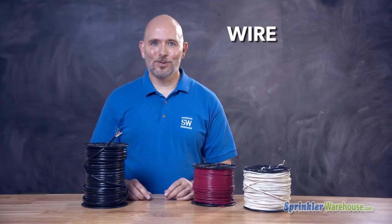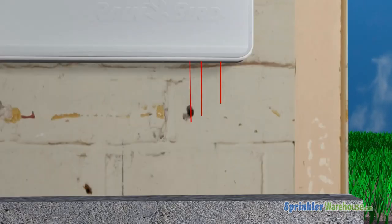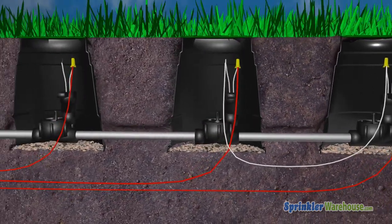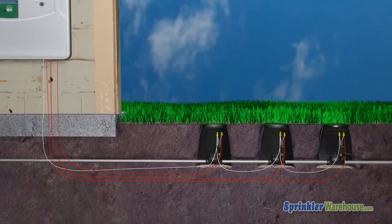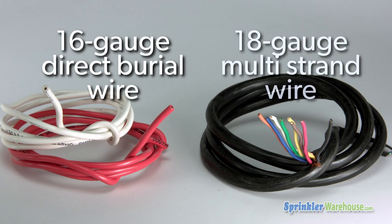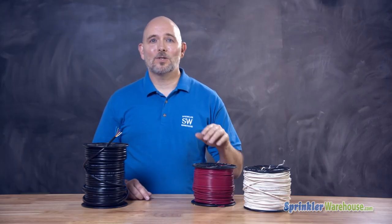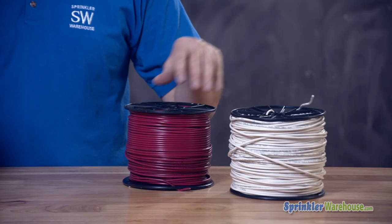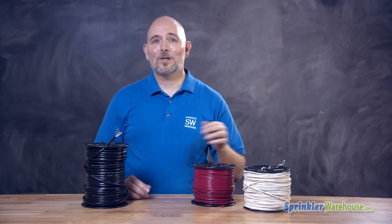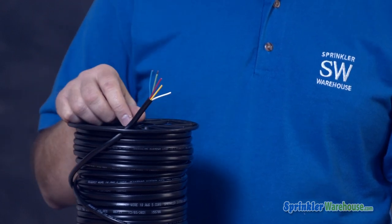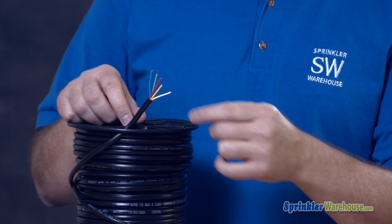Wires run underground from the controller to the valves. Each zone has a hot wire that goes directly to a valve, and a common wire goes from one valve to the next in a daisy chain and back to the controller. Irrigation wire is either 16 gauge or 18 gauge for residential systems. With 16 gauge wire, there should be at least one colored wire — the hot wire — and a white wire for the common. There's also multi-conductor wire, which is 18 gauge; multiple hot wires are bundled together with one white wire. It works well when valves are grouped in a manifold and can save you money in the right situation.